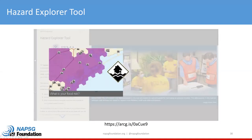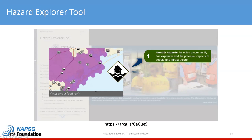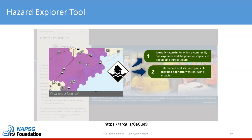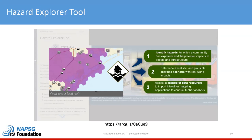For the exercise planner, you'll find tools that help you integrate GIS into the full exercise planning process, and one of these tools is the Hazard Explorer tool. This tool is delivered in an easy-to-navigate map journal to help you identify hazard exposure within your community, determine a realistic and plausible exercise scenario, and access a catalog of geospatial data and resources. We're going to run through an exercise scenario.